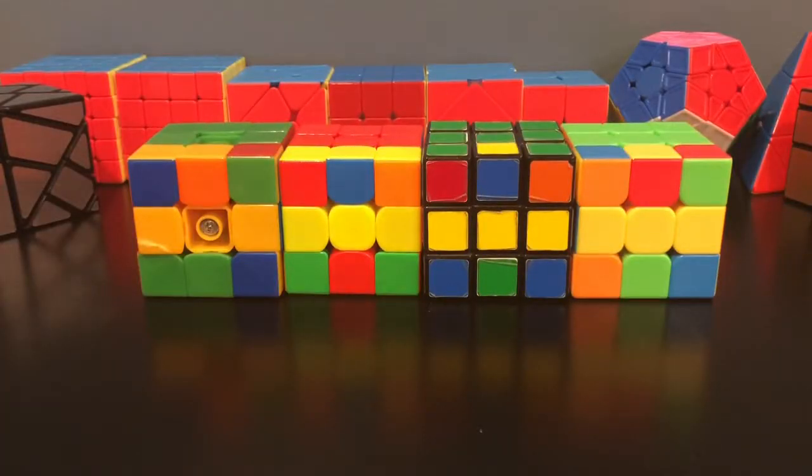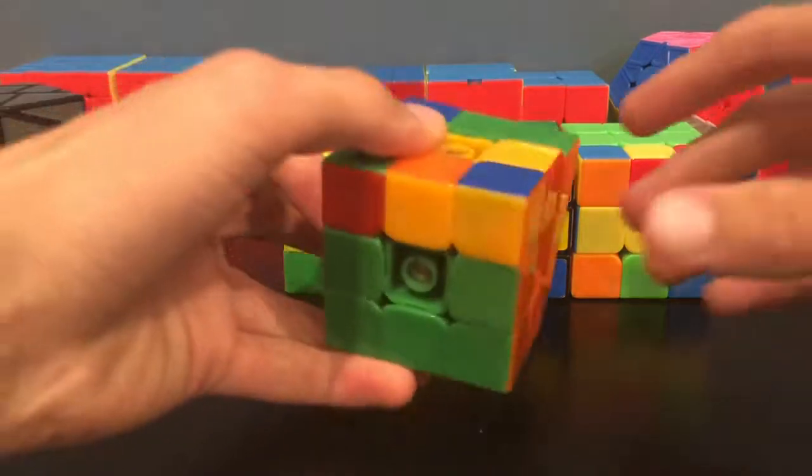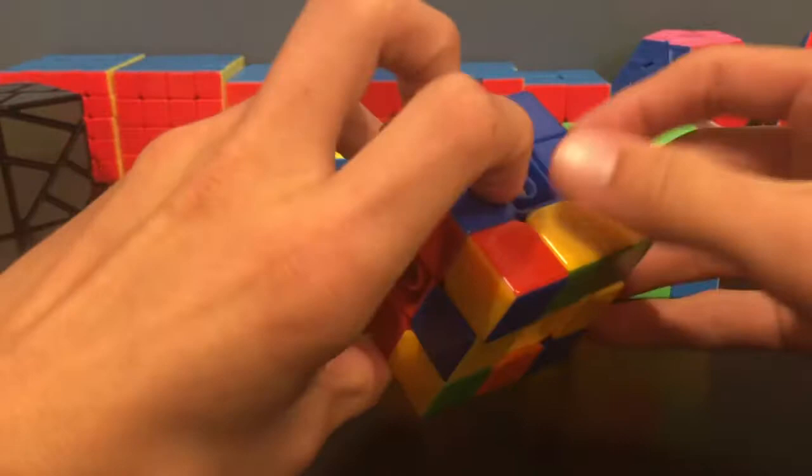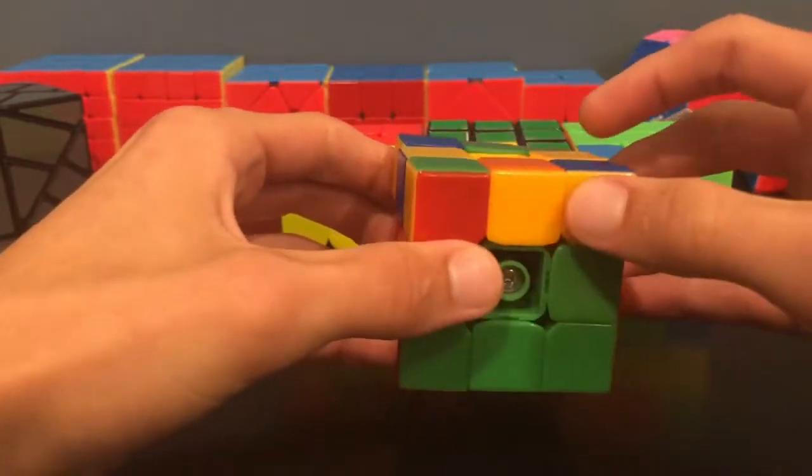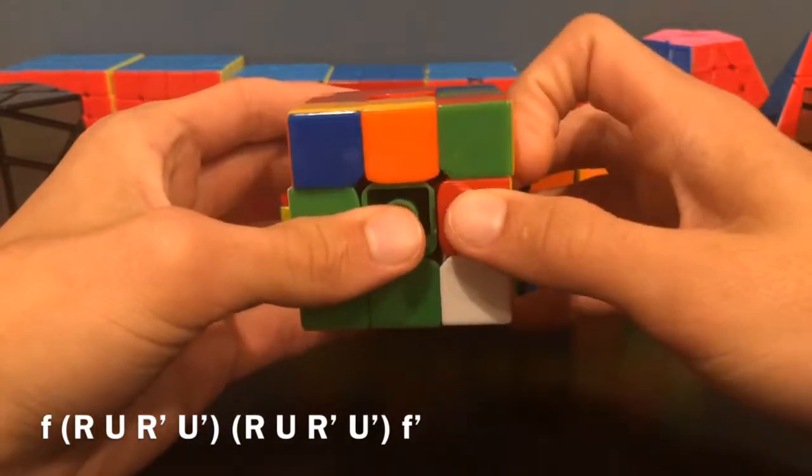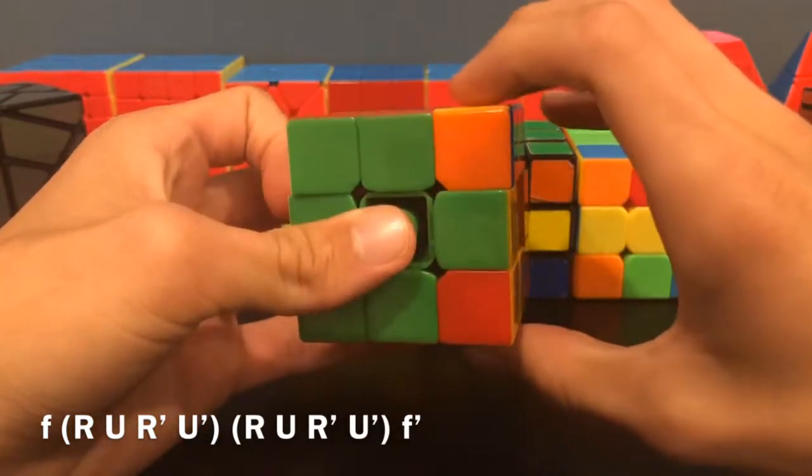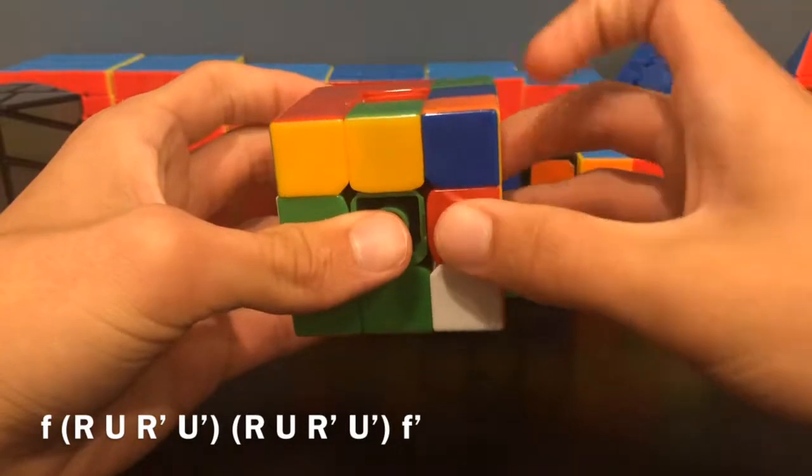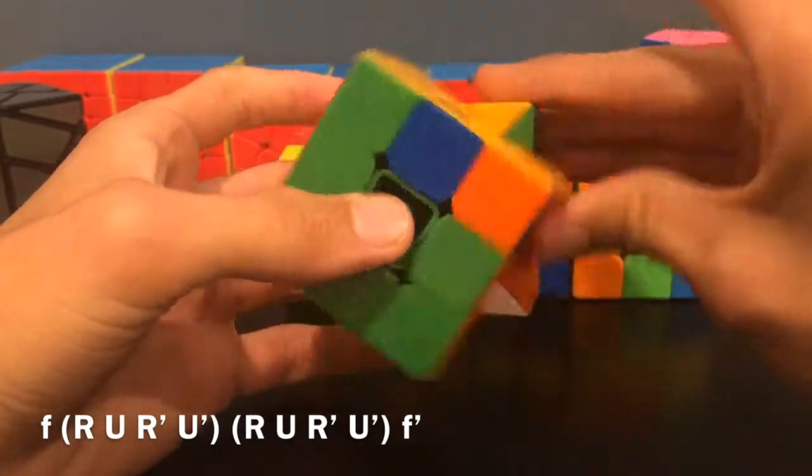These next four cases have no corners facing up so let's go over the differences between them. This first one is the only one with blocks of two so it's pretty easy to spot. We'll hold this block of two here and do this algorithm: F wide R U R' U' R U R' U' F wide prime.